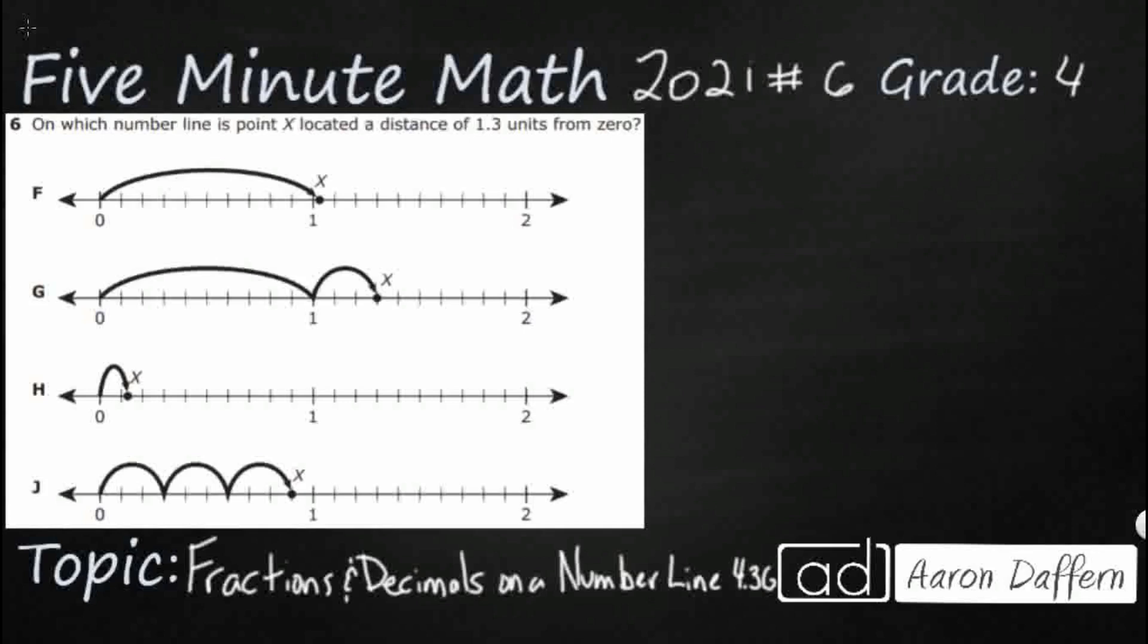So it seems pretty simple here, we've got four number lines, they all go from 0 to 2. We need to find where point X is 1 and 3 tenths.